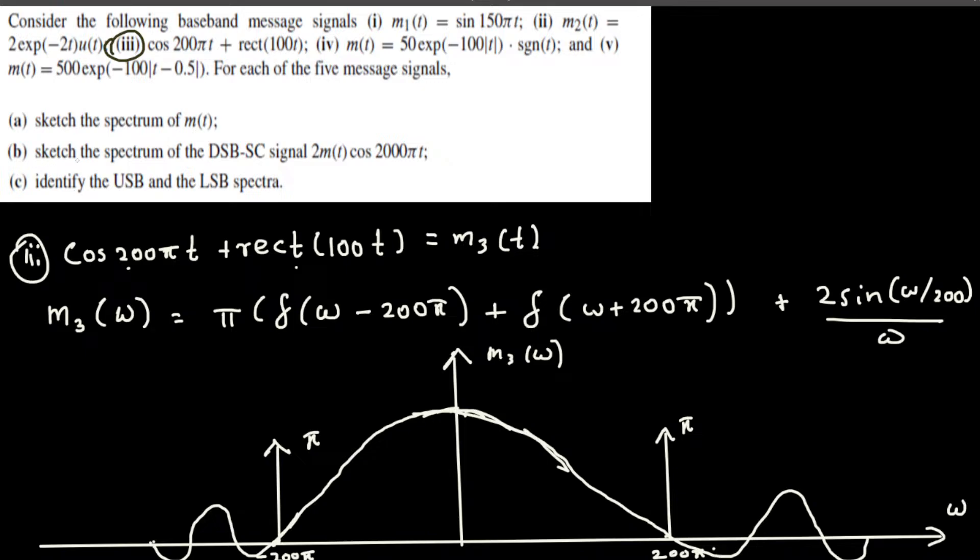The B part asks to sketch the spectrum of DSB-SC signal 2m(t)cos(2000πt). Here we have to just look at the omega value in this case, that is 2000π. So this signal is going to be shifted based on this omega value, so it's going to be 2000π to the right and 2000π to the left. The new diagram is going to have like two of these. This is going to be double because of this DSB-SC signal. It's going to be doubled but shifted, centered at 2000π left and 2000π right. Let's go ahead and do it in the next page.